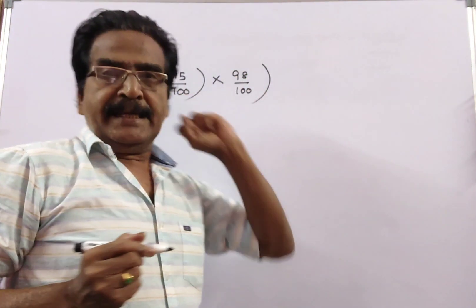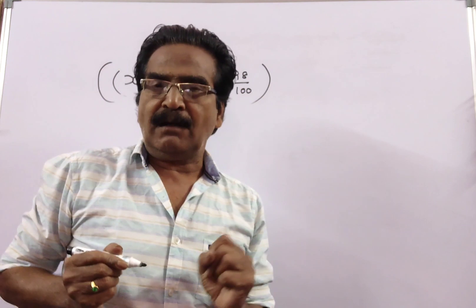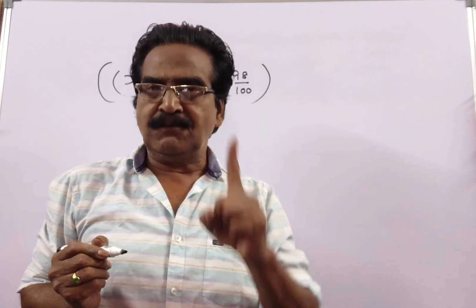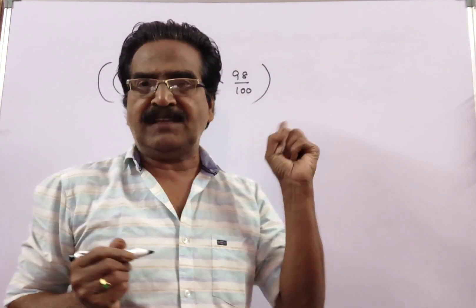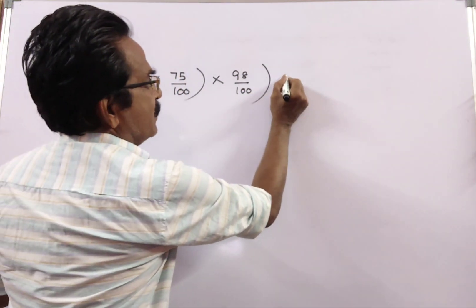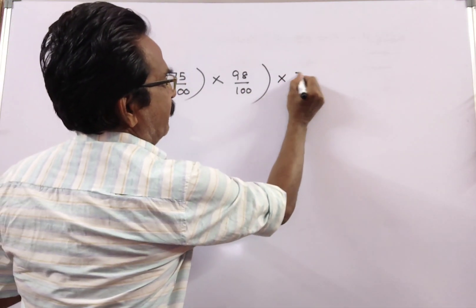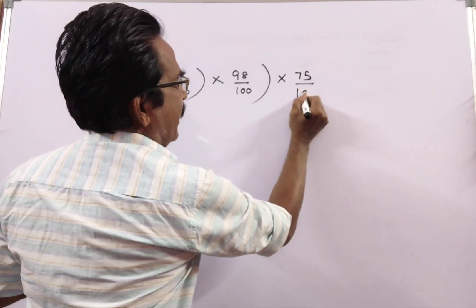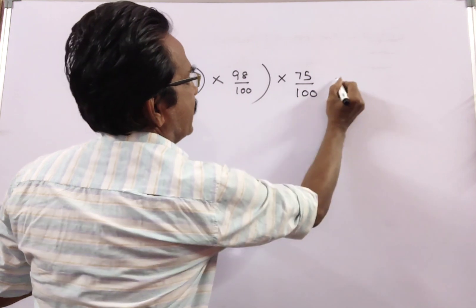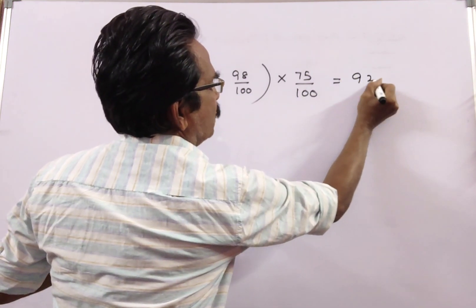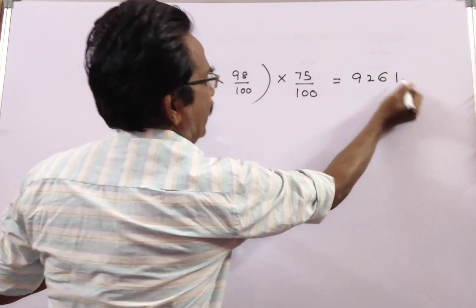A candidate got 9261 votes, which was 75% of the valid votes. So, 75% of the valid votes is equal to 9261.